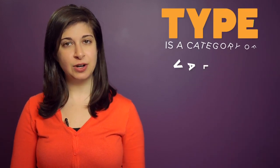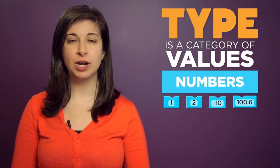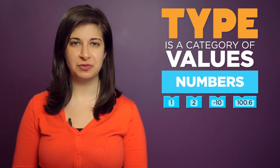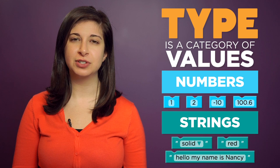A type is a category of values. 1, 2, negative 10, and 100.6 are all examples of numbers. And solid, red, or hello, my name is Nancy, are all examples of strings.